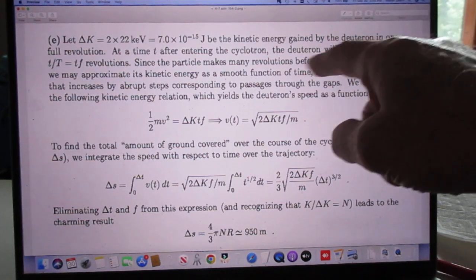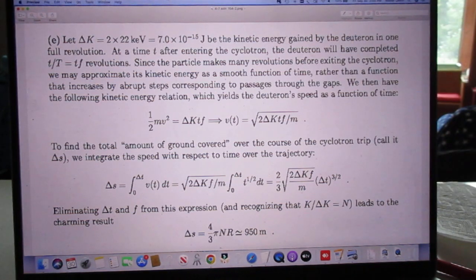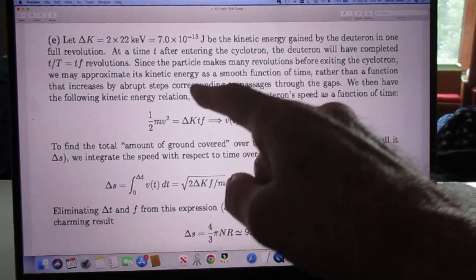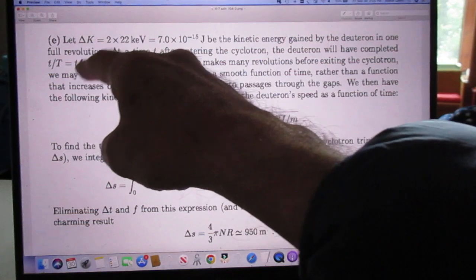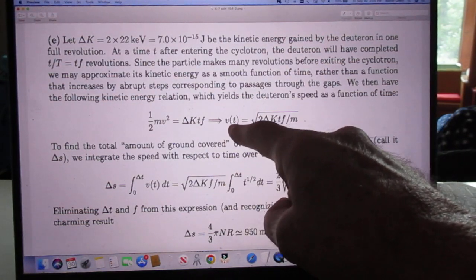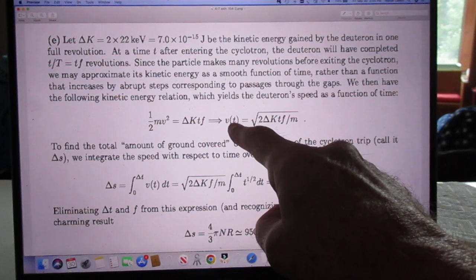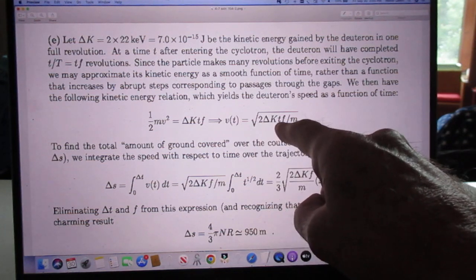Since the particle makes many revolutions before exiting the cyclotron, we may approximate its kinetic energy as a smooth function of time rather than a function that increases by abrupt steps corresponding to passages through the gaps. So we then have that one half Mv squared is delta K, which is the increase for each rotation, and this Tf is the number of rotations. So we now have the speed of the deuteron as a function of time.